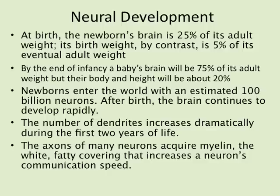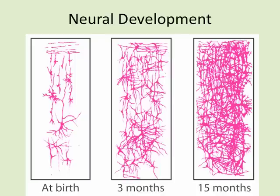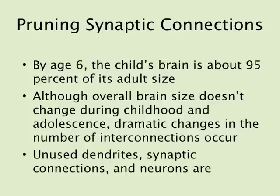The axons of many neurons acquire myelin — the white fatty covering that increases neuron communication — and as the baby grows, myelination proceeds faster and faster. On the left side you can see a brain image of a baby at birth, at three months, and at fifteen months. The message is clear: make sure you feed that baby the best nutrients to build that brain, because you only get one brain. Pruning synaptic connections is also key to making neural development more fine-tuned.